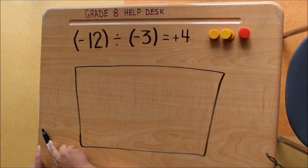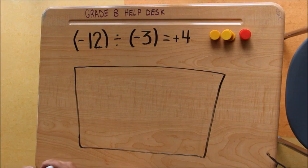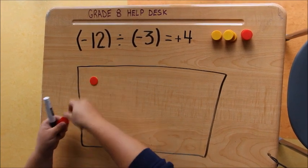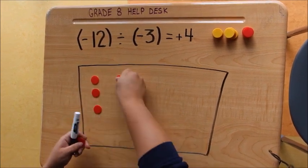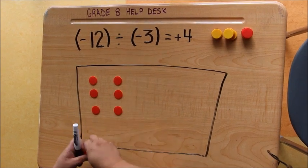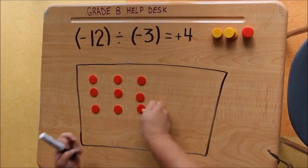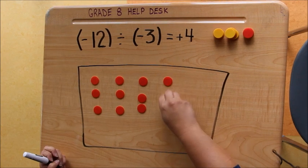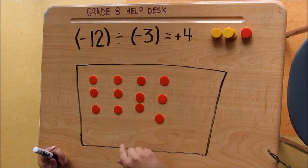So if I do that, I have 1, 2, 3, 4, 5, 6, 7, 8, 9, 10, 11, 12.